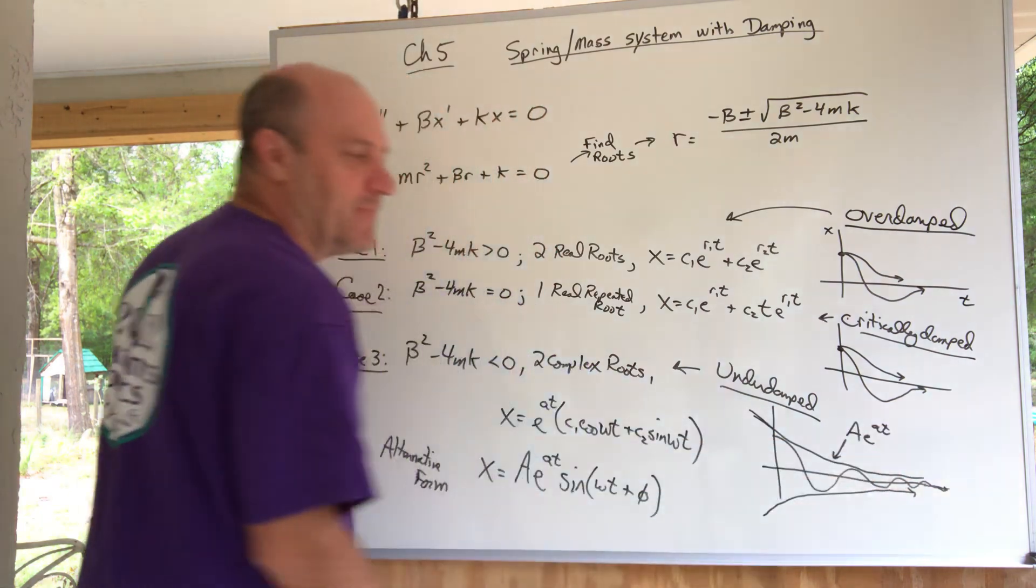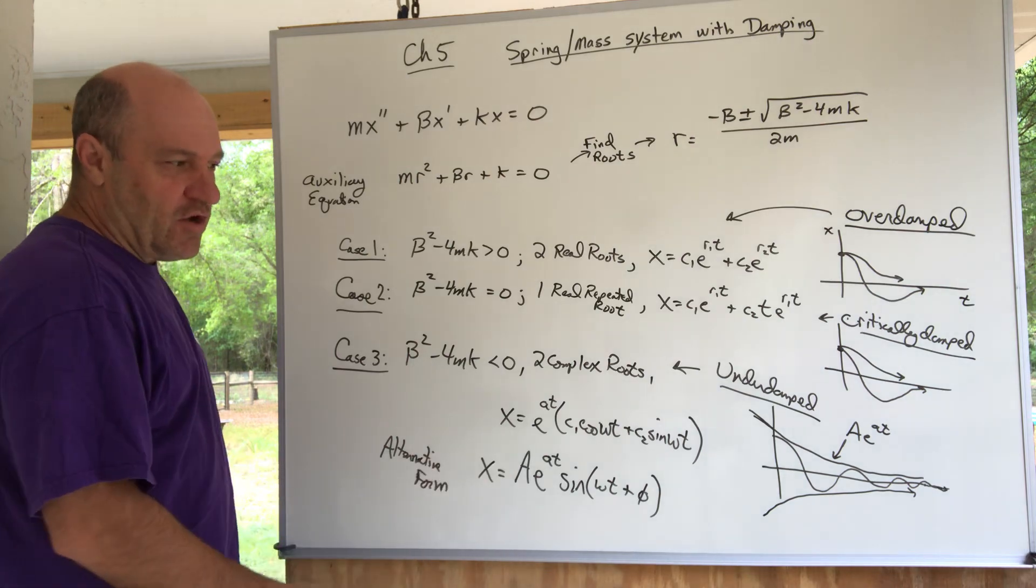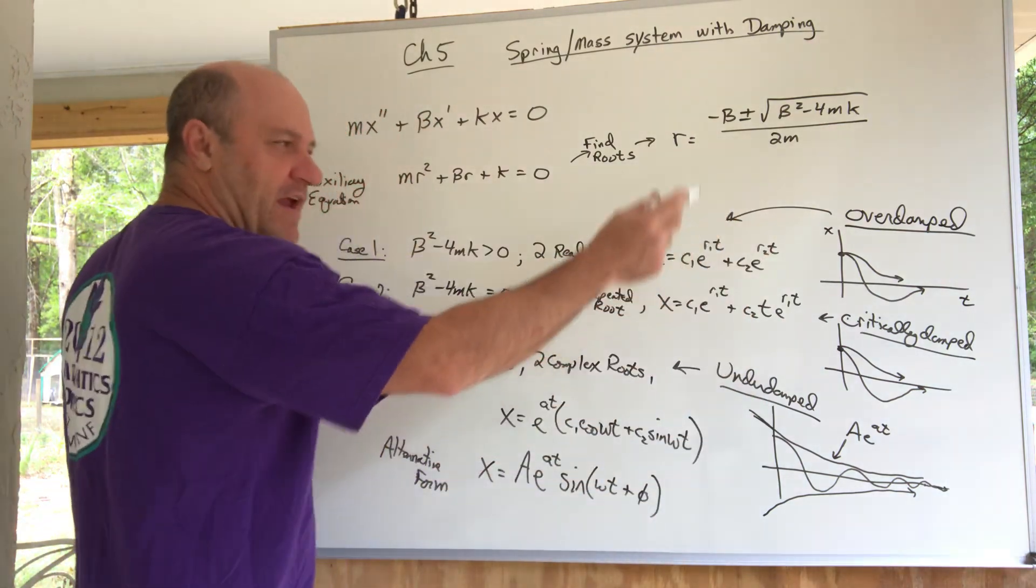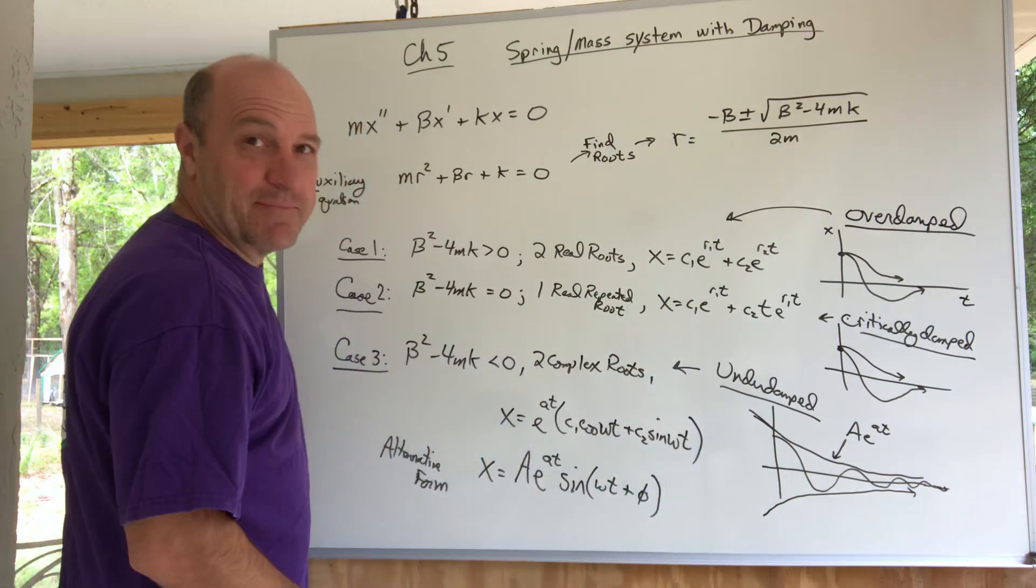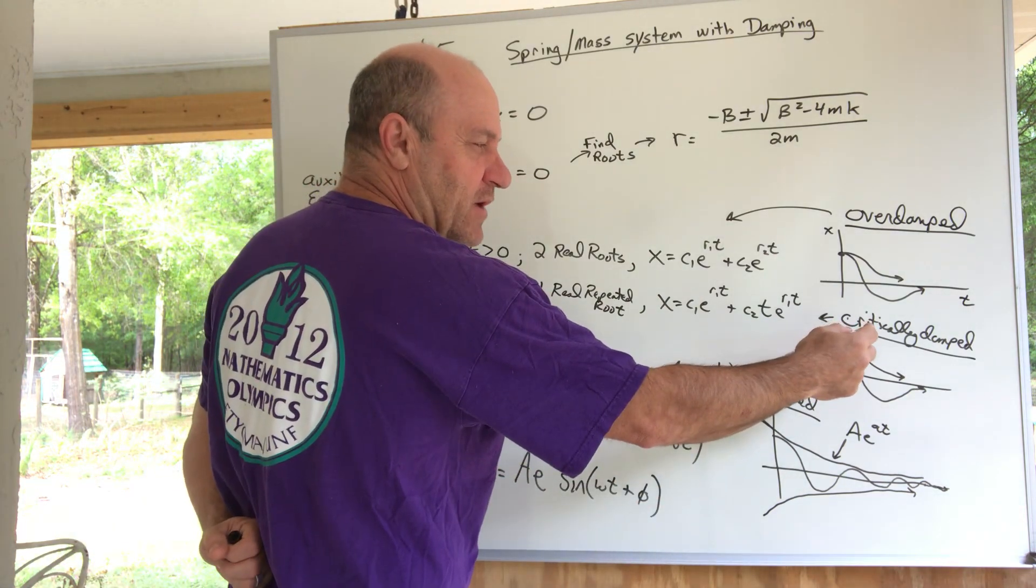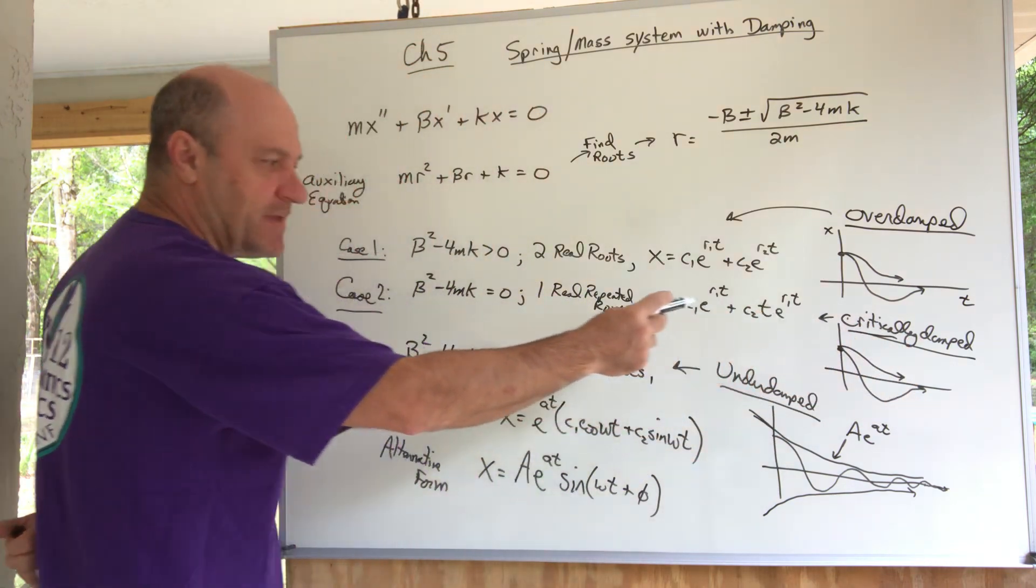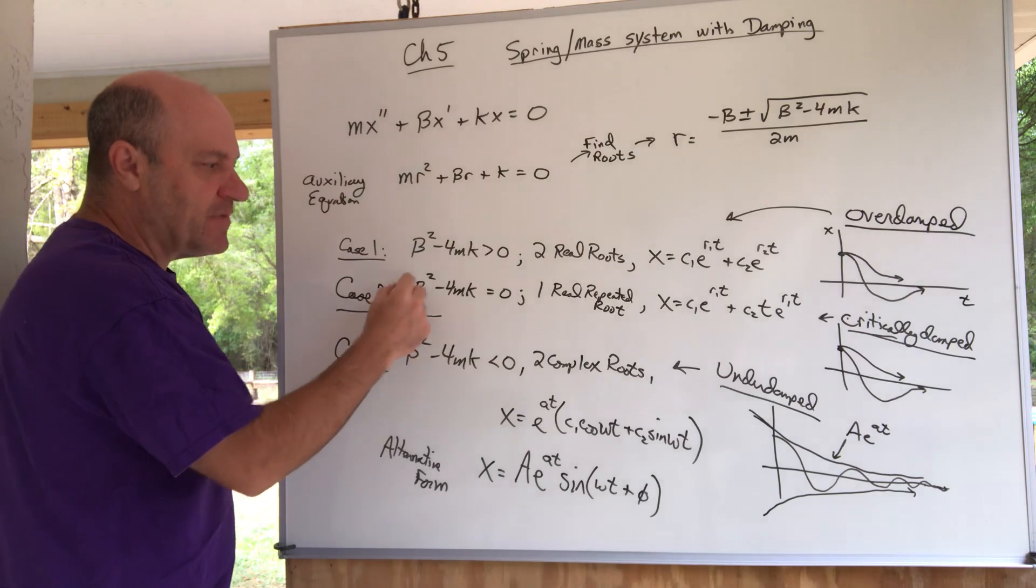Overdamped—very damped—and the least damped. This one in the middle here is called critically damped, and that's a funny name. I want to say I think its name is critically damped because it arises from the discriminant equaling zero.